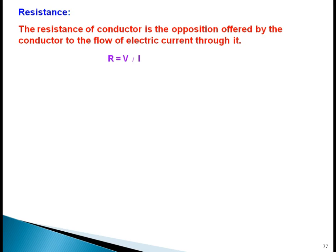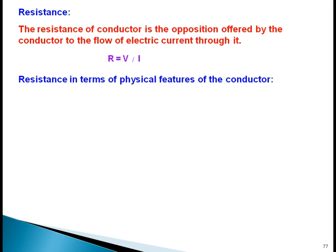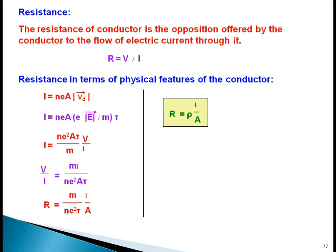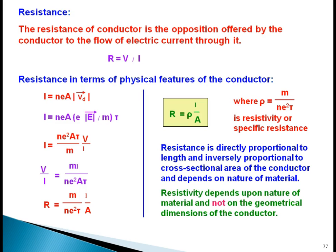The resistance of a conductor is the opposition offered by the conductor to the flow of electric current. You can also say it is the ratio of voltage to current. The SI unit of resistance is ohm. One ohm is defined as one volt upon one ampere.